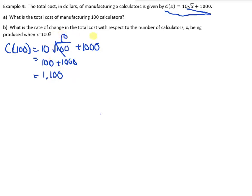Now, what is the rate of change in the total cost with respect to the number of calculators x being produced when x equals 100? So, instead of just subbing this in, we actually have to find the rate of change when x equals 100. So, I'm going to do it the second way, where we're going to actually sub in c at, well, we already subbed in c at 100, so that's perfect. Let's sub in c at 100 plus h.